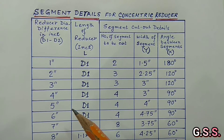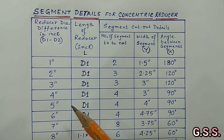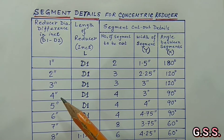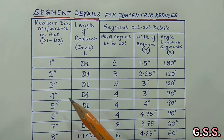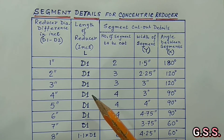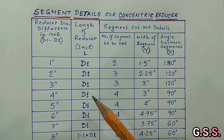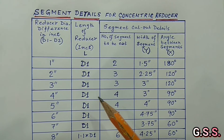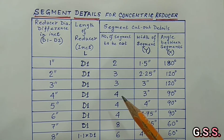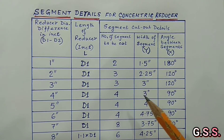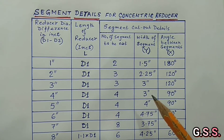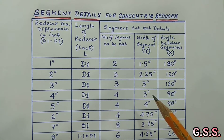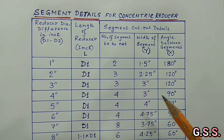If we want to fabricate one 16 inch by 12 inch concentric reducer, the diameter difference is 4 inches. Length of reducer is D1, which is 16 inches — that means 406.4 millimeters. Number of segments will be 4. Width of each segment cut shall be 3 inches. And angle between segments is 90 degrees.